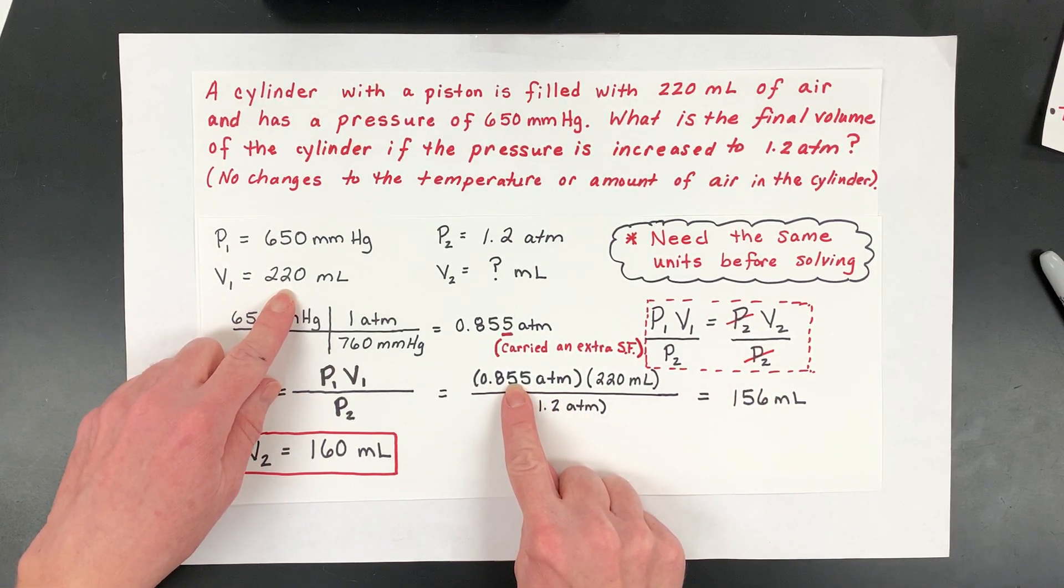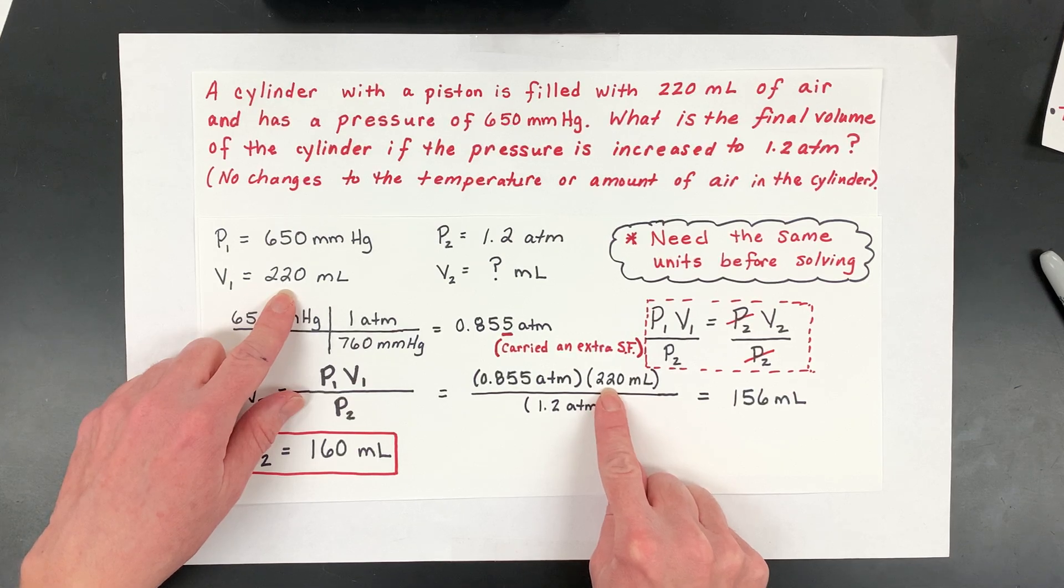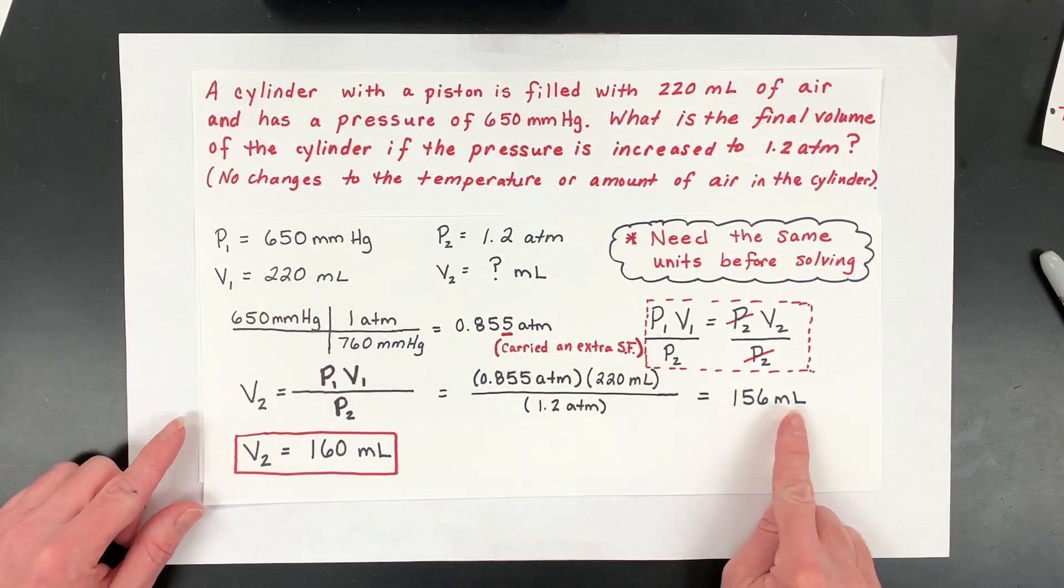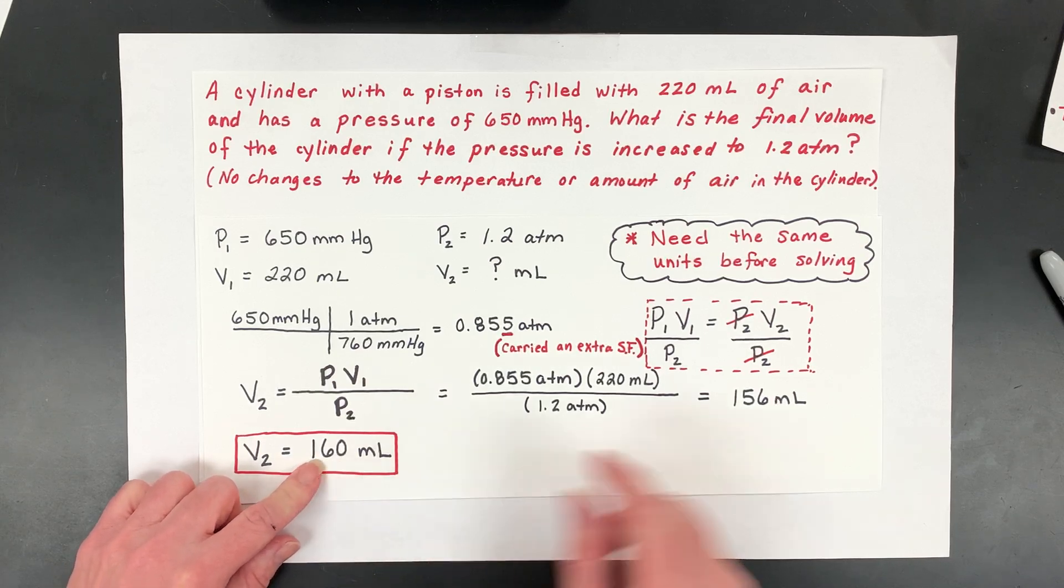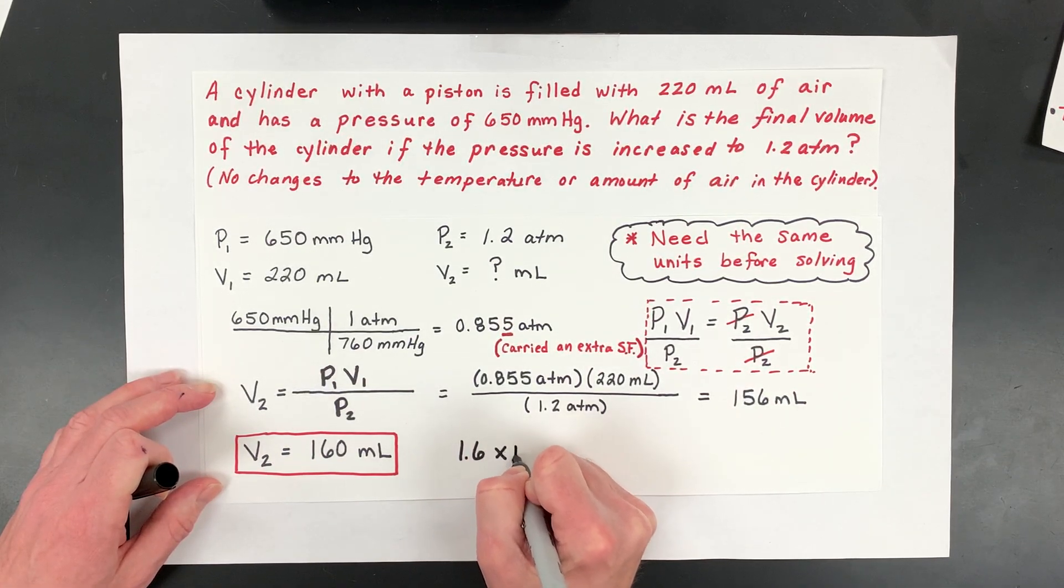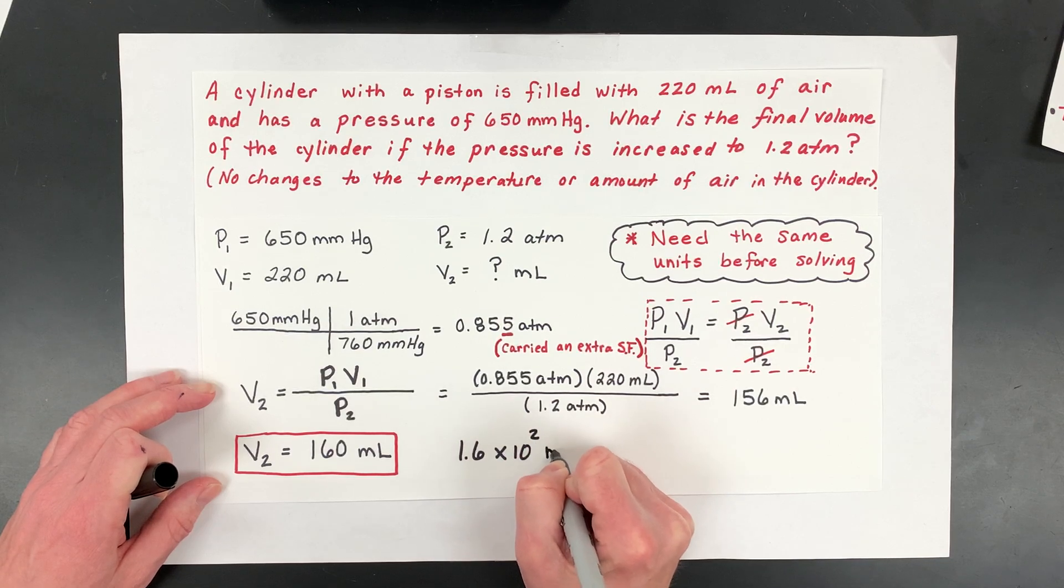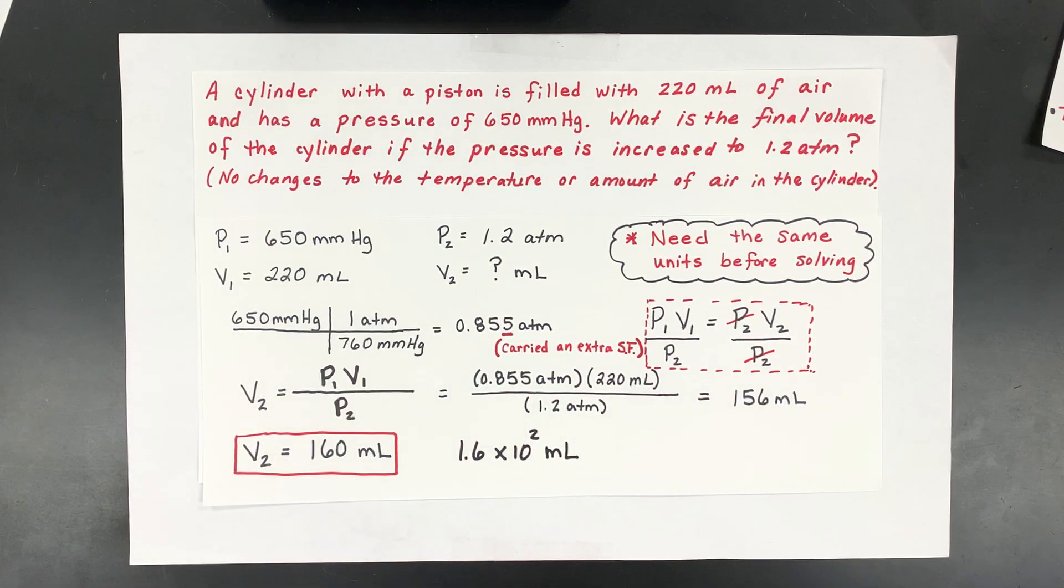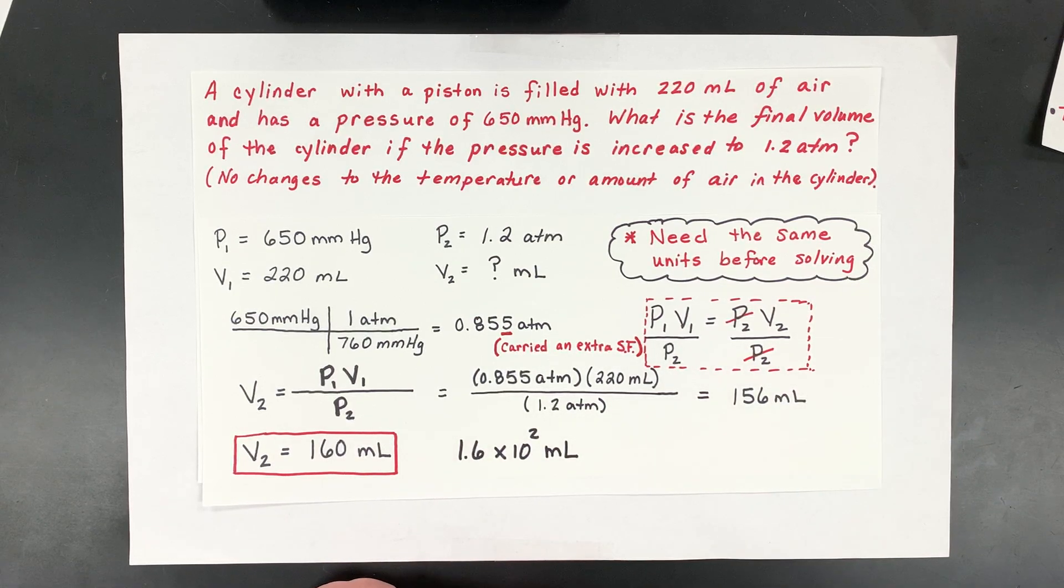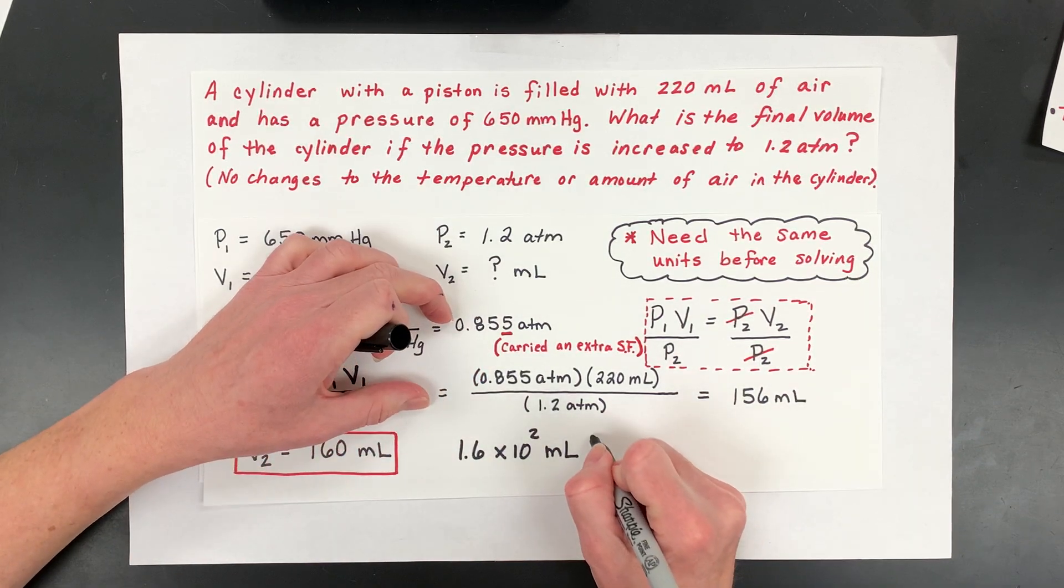So take your 0.855, you'll multiply it by your 220, and then divide by 1.2. Now I carried an extra sig fig, so then in the end, I have to just round to 160, or if you like scientific notation, it would just be 1.6 times 10 to the 2 milliliters. There could even be a chance that maybe they want you to convert this to liters, and then you'd have to do a volume conversion, so I'm just going to add that in just in case.